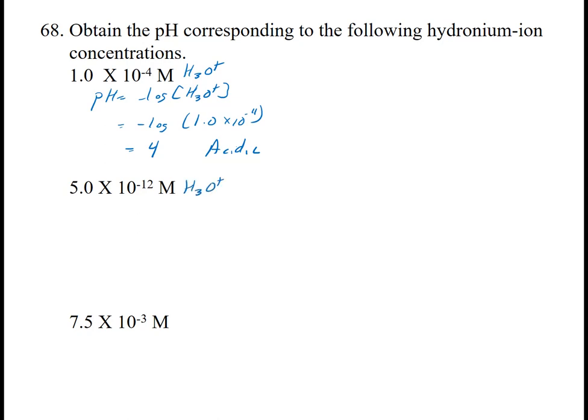Again, this is H3O+, and the formula is pH is equal to negative log of H3O+. So it's the negative log of 5.0 times 10 to the minus 12th, and I get 11.3. I do want to point out, this one was exactly, this one was exactly the same 4 and 4.